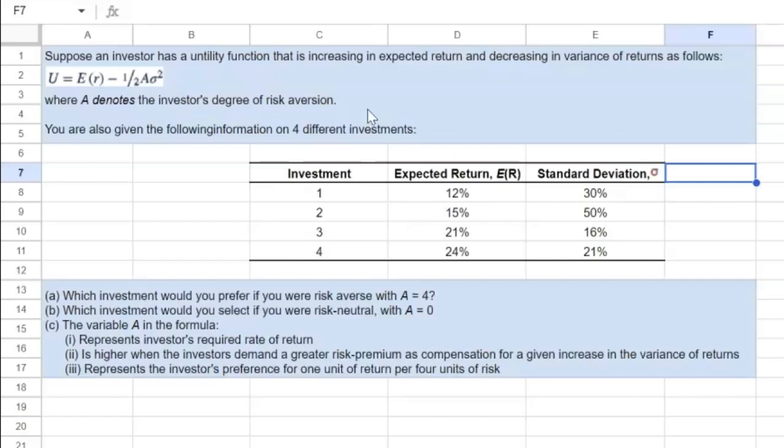At the same time, if the standard deviation or the variance of the returns goes up, so the variance of the returns is represented by sigma squared, well then that has a dampening effect on utility because we're subtracting this big number.